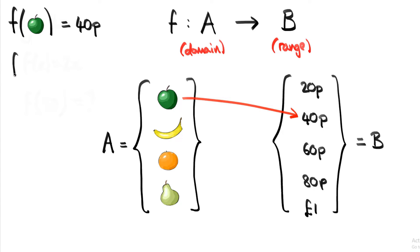Alright, now let's say f of banana is 20p, so we draw the arrow again from banana to 20p. f of orange, so that's 80p.